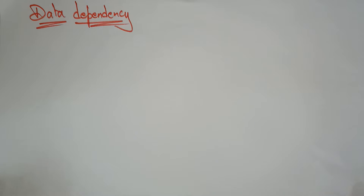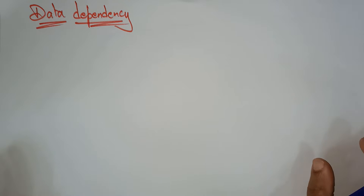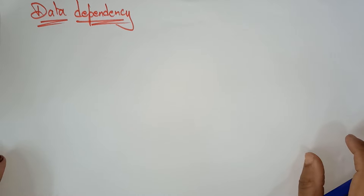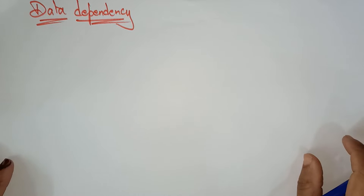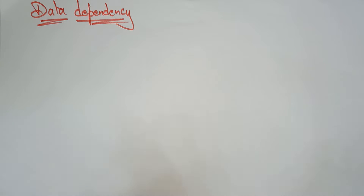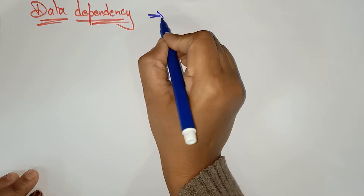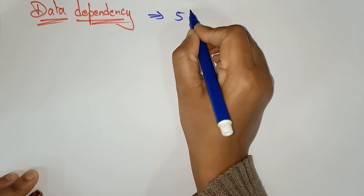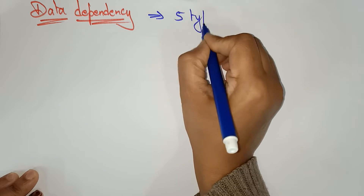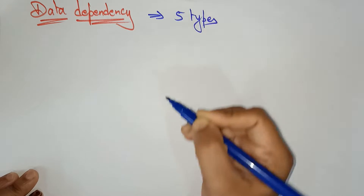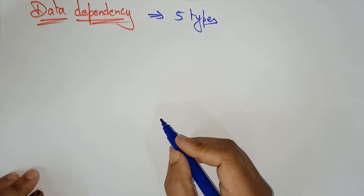Hi students, welcome back. Let's continue with the conditions of parallelism. The first condition of parallelism is data dependency. There are 5 types of data dependencies.